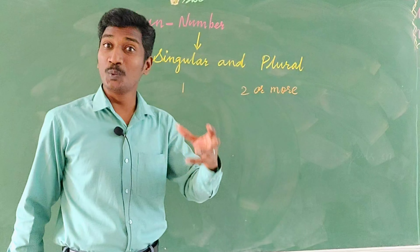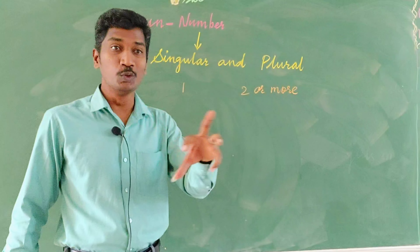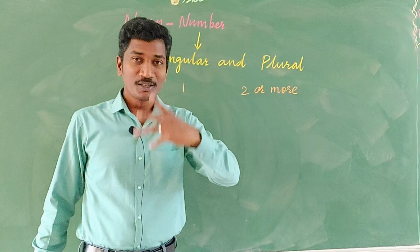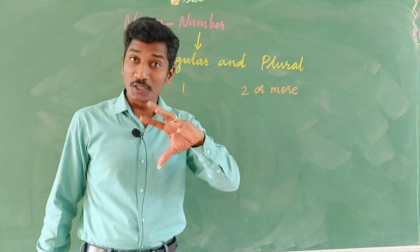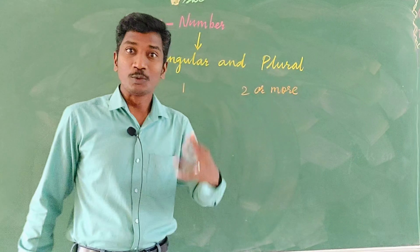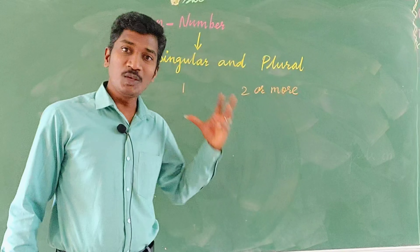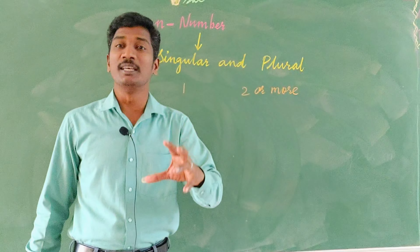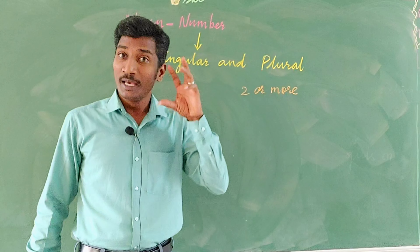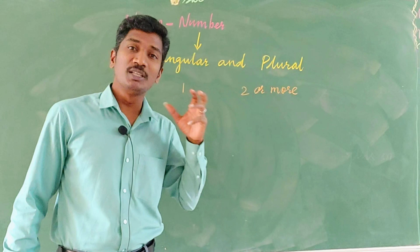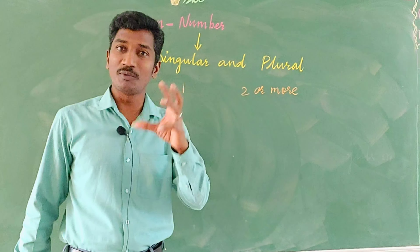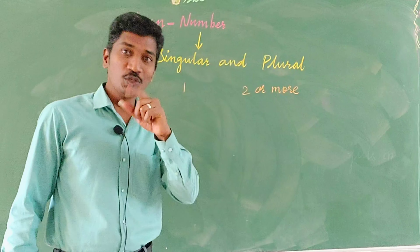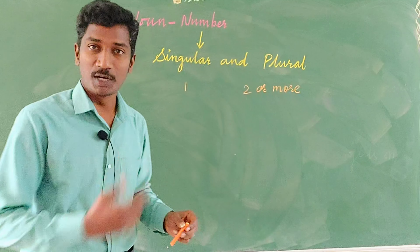But here comes the complicated part — the spelling rules for singular and plural. It starts from very simple to a tougher part. So please pay attention and see one by one, so you will understand very clearly. I will give you examples for each and every single rule, so that will make the singular and plural clear. Come, let us see.